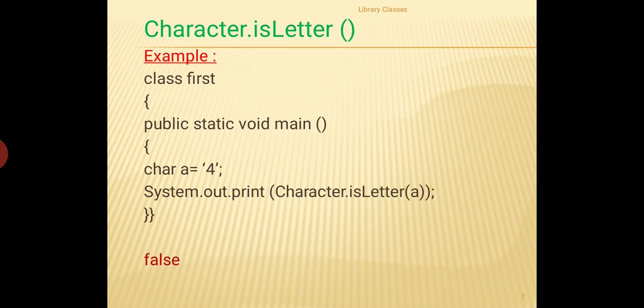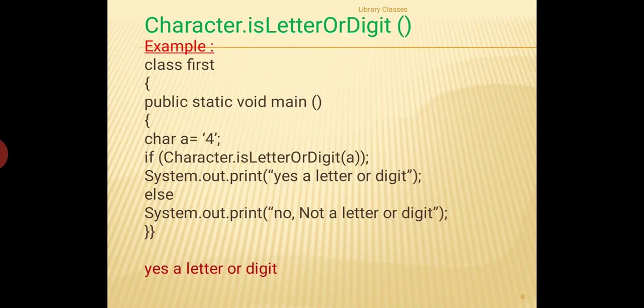Coming back to isDigit(), it will check if the character stored is a digit and give the answer as true or false, as shown in the program. The next one in the series is isLetter(), which checks if the character is an alphabet. Since the character stored is a digit (4), isLetter() gives false.